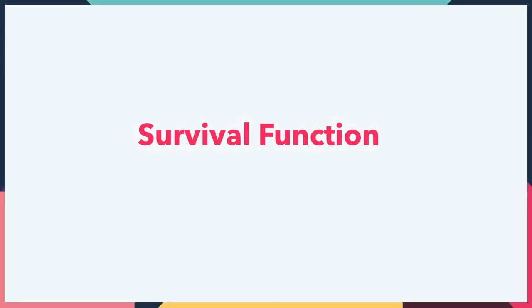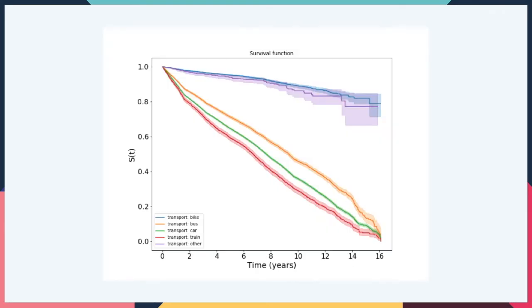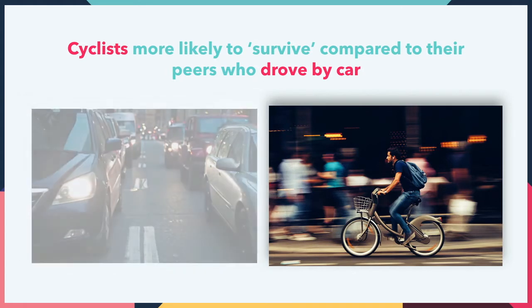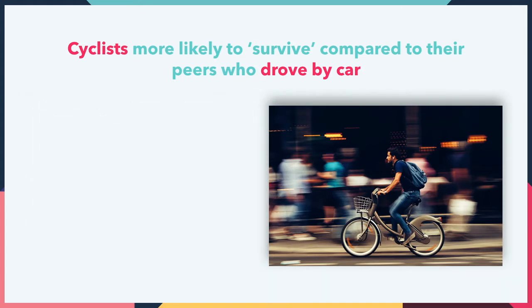Hello again, it's Tom from Jigsaw here. Welcome back to part two in this series on using survival analysis to understand employee churn. Before we learn about our churn, let's have a brief recap of the last instalment. We introduced the concept of a survival function and how we can use this to compare different demographics in the case of churn. Here the mode of transport was used to compare churn rates for employees at a fictitious company, and it was evident that cyclists were much more likely to survive compared to their peers who drove by car.